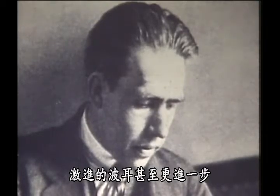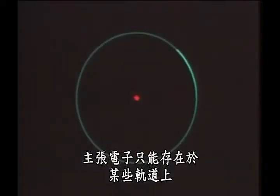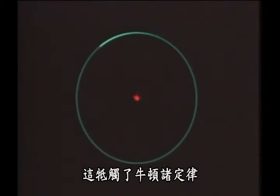Being radical, Bohr had gone further, far enough to propose that an electron could exist only in certain orbits, which was contrary to Newton's laws.